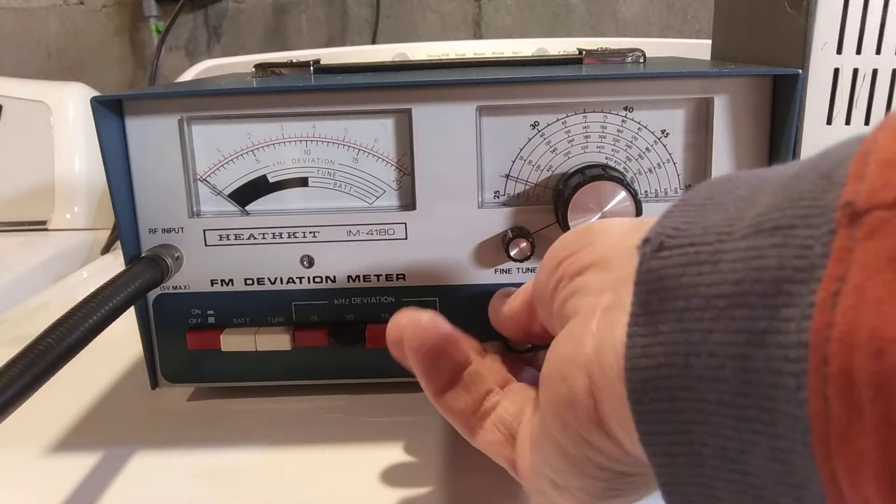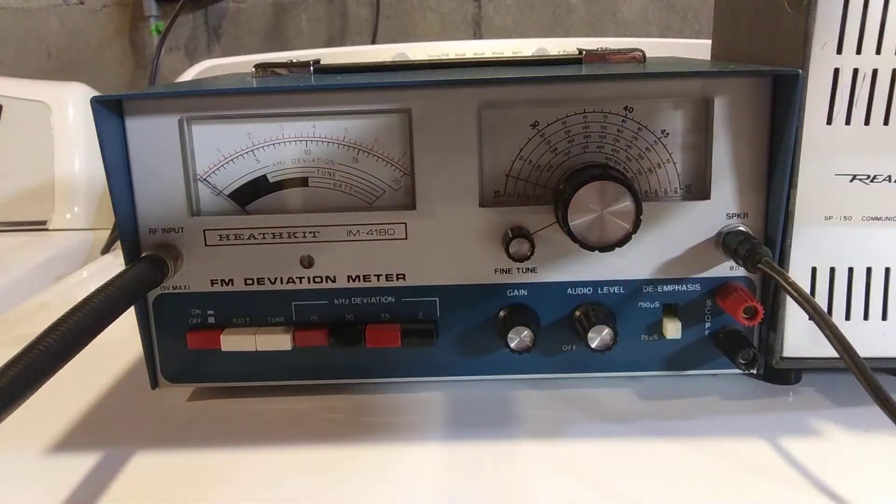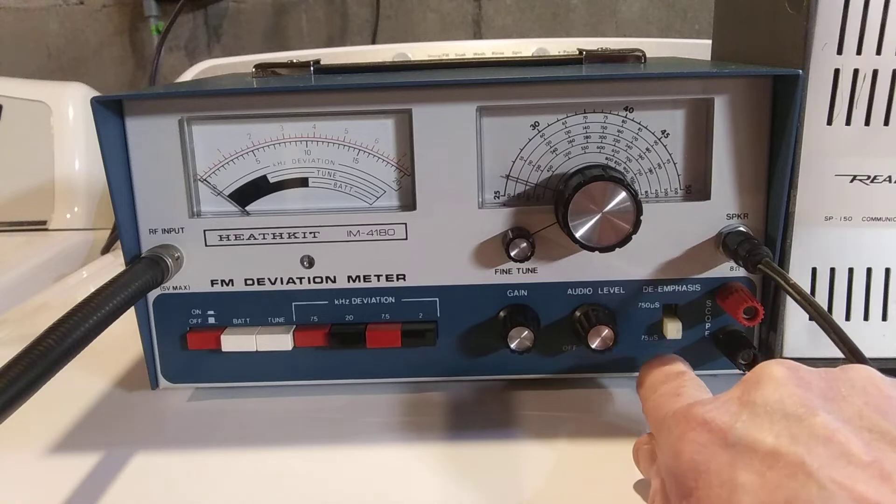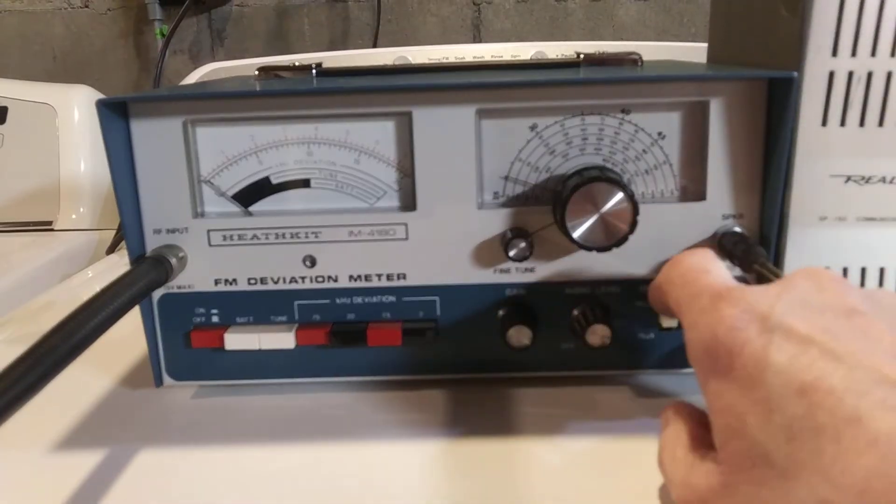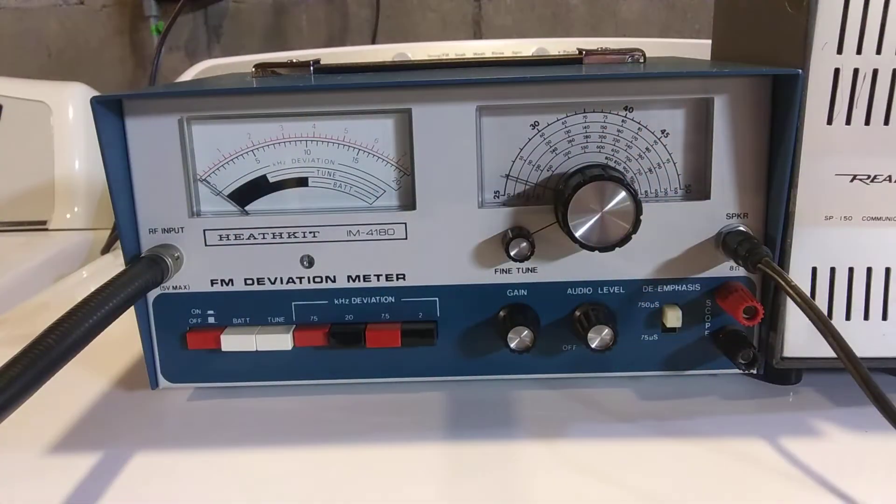And the instructions say to turn the gain all the way up. I have the volume for the speaker all the way up. There's a de-emphasis switch here. 750 microseconds at the top and 75 microseconds at the bottom. And notice I can't really hear it too well. The manual explains what it's for.